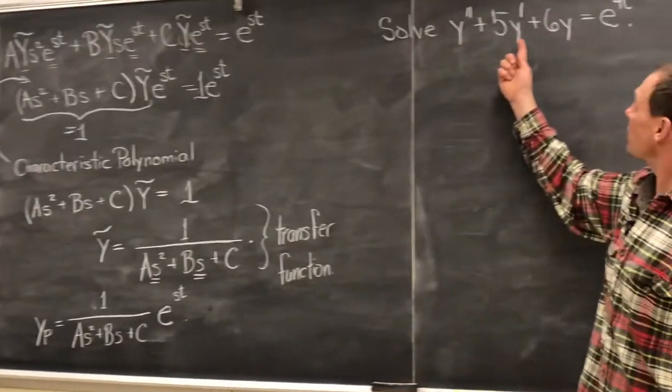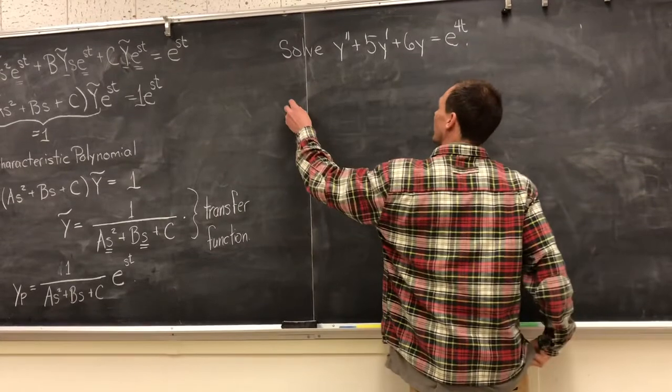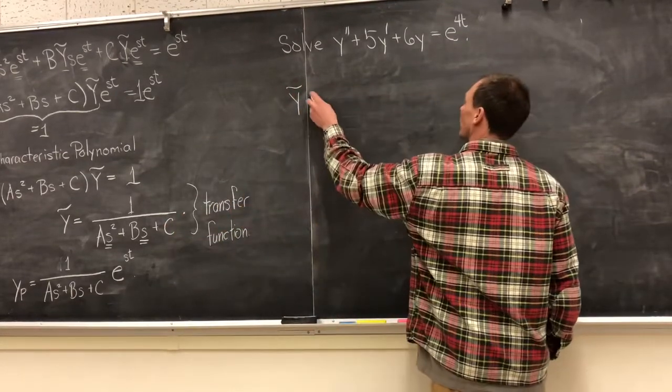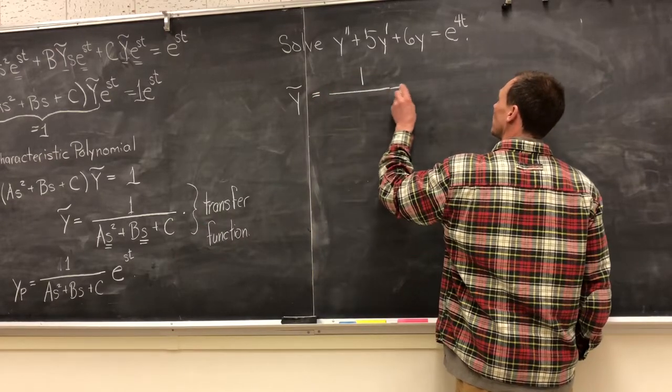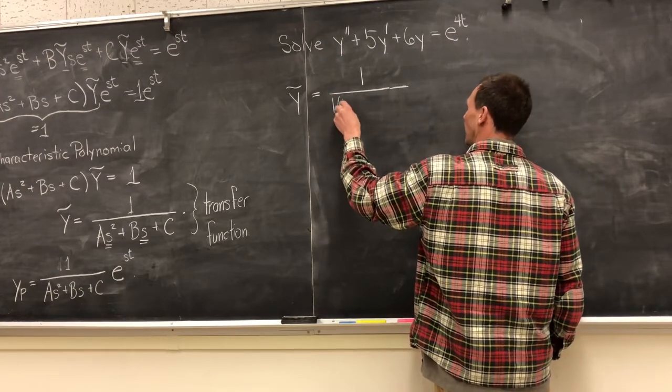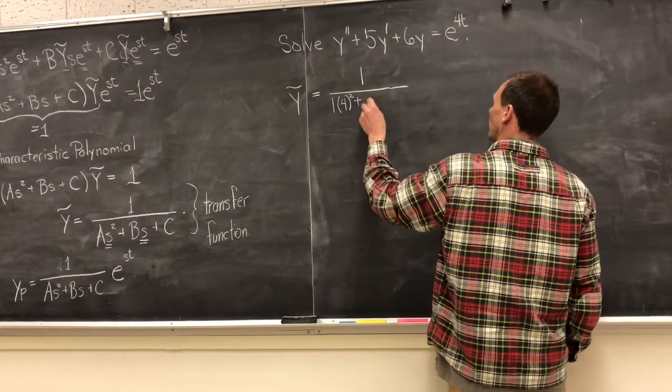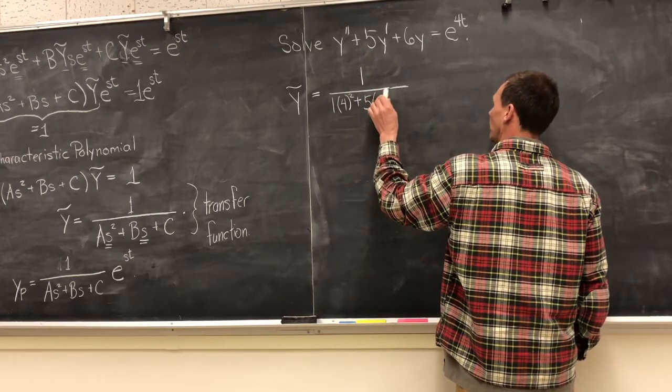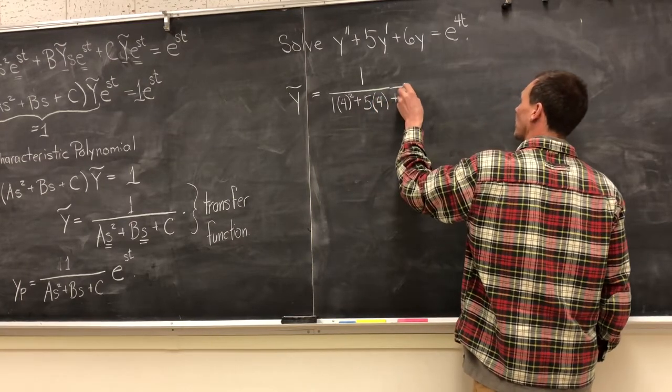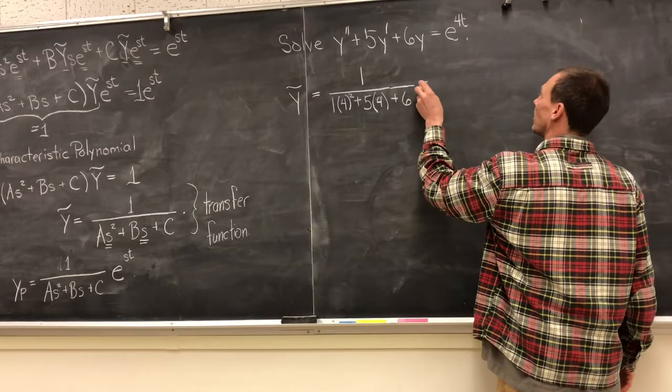And so we can calculate our Y tilde. Our transfer function is very simply one over—our coefficient is 1 times the s squared, which is 16, plus our next coefficient is b times the s, which is 5 times 4, that's 20, plus 6. And there's no s on the third coefficient.